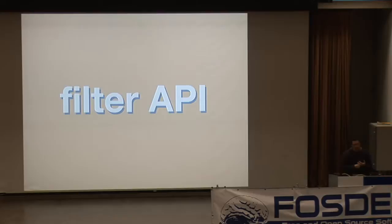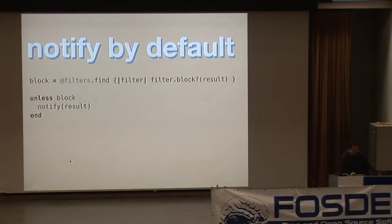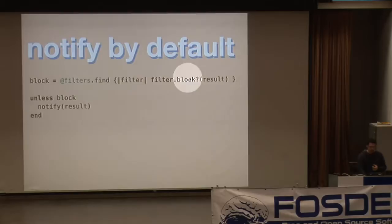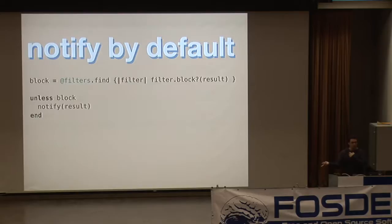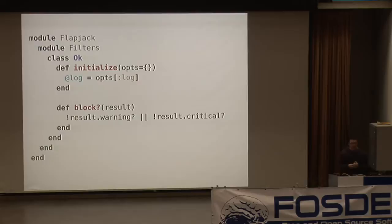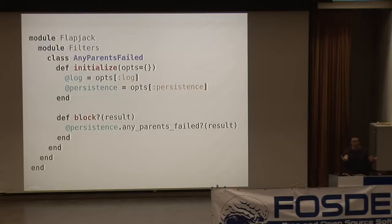The final set of APIs in the notifier are the filter APIs, and these are probably the coolest feature of Flapjack. Flapjack takes the approach that we should always be notifying unless something is blocking us from notifying. There's a filters chain — the method goes through all the filters, passes in the result, and if any of those filters block then we don't notify. For example, we have an OK filter: if the result is not warning or not critical, then we do need to notify. You can also couple that with things like checking if any parents have failed.